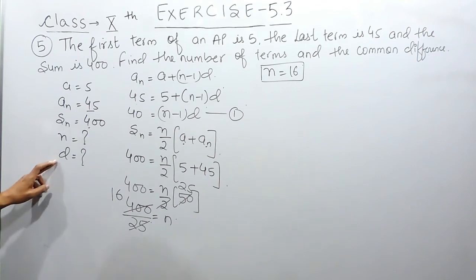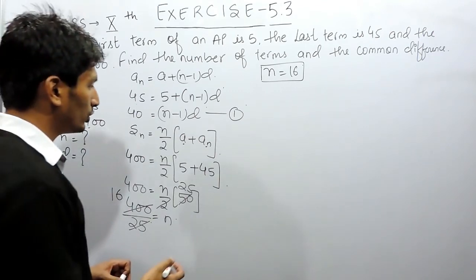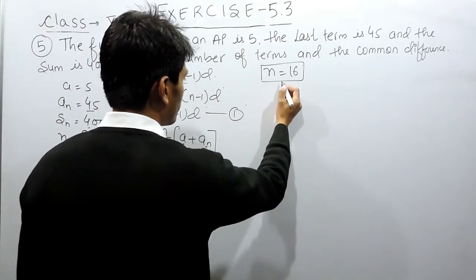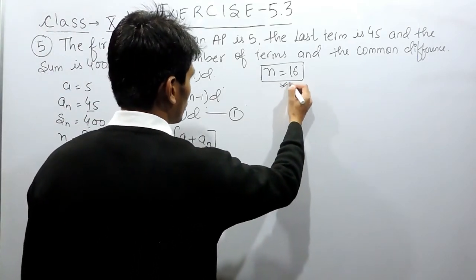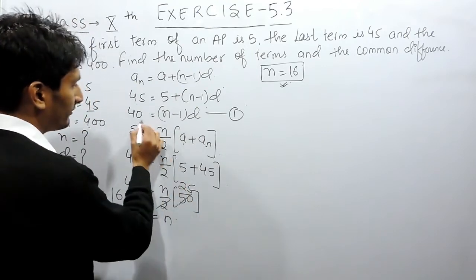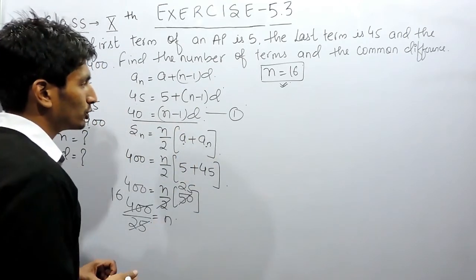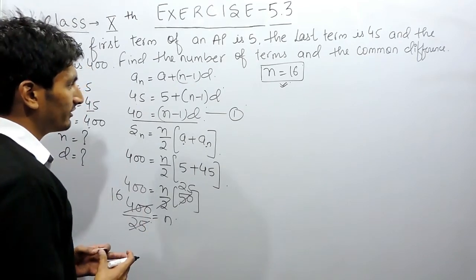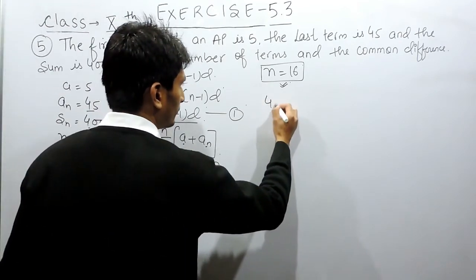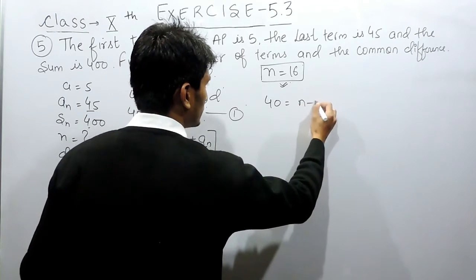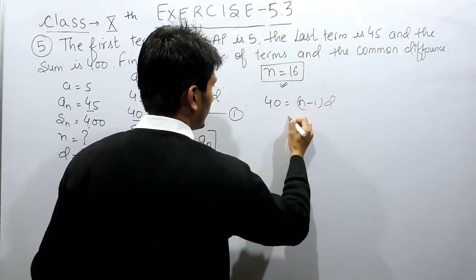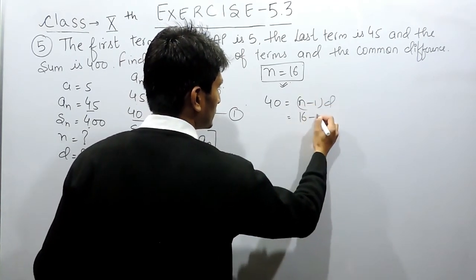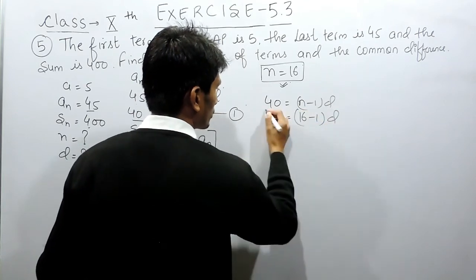Then after that you have to find the common difference here. To find out the common difference, we can substitute the value of n in the first equation. So if I substitute the value of n in the first equation, I will get my common difference. So here 40 will be equals to n minus 1 into d and here the number of terms are 16.